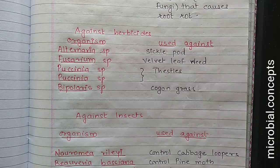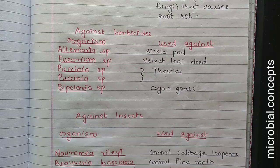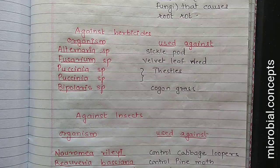Next are examples against weeds — unwanted plants that grow between crops and compete for nutrition. Alternaria and Fusarium species are used against sickle pod and velvet leaf weed. Puccinia species are used against thistles. Bipolaris is used against cogon grass.